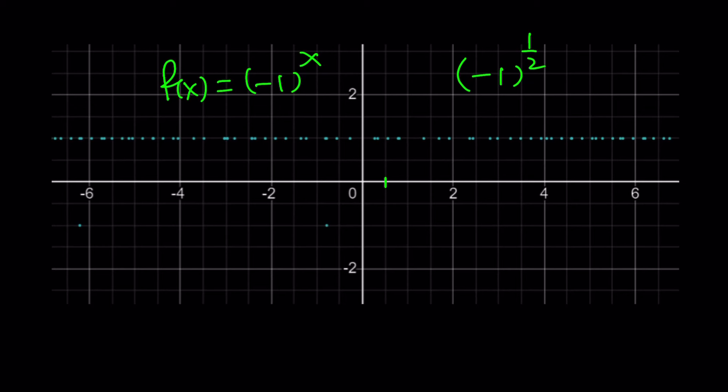Negative one to the power 1 half can be interpreted as a complex number. Like the square roots of negative one, the principal one being i and the other one being negative i. But of course, you can't show these on the real coordinate plane. By the way, if you have a complex function, you cannot graph it because it is four-dimensional. Anyways, that's a different story. But this is the graph of negative one to the power x with lots of discontinuities.